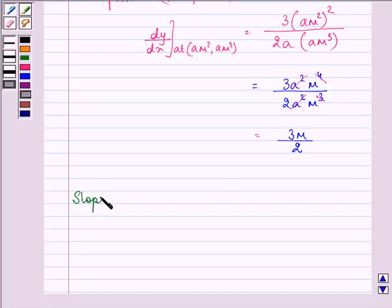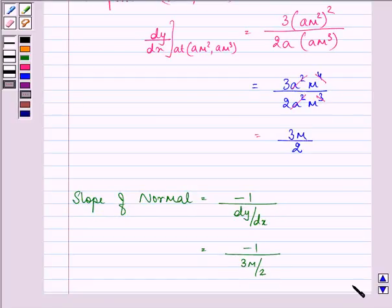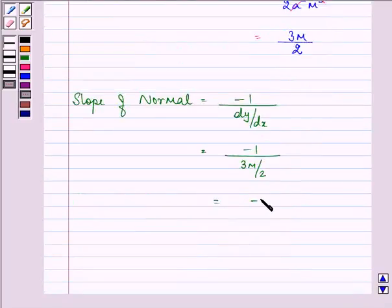Now, we can find slope of normal. We know that the formula for finding slope of the normal is minus 1 upon dy/dx. That is minus 1 upon 3m by 2, which gives us the answer as minus 2 upon 3m. This is the slope for the normal.